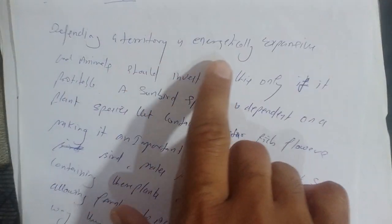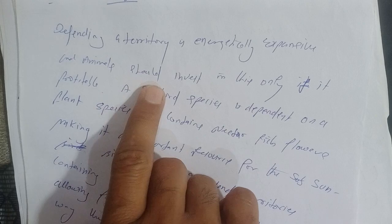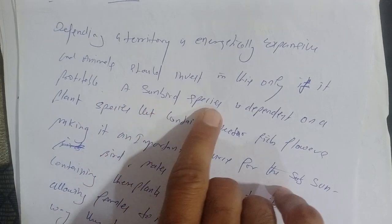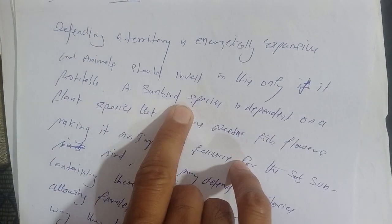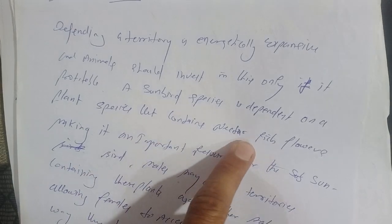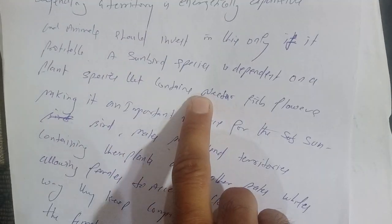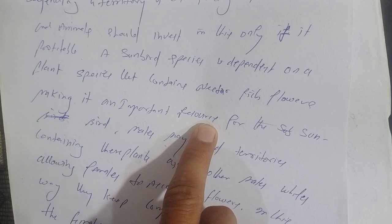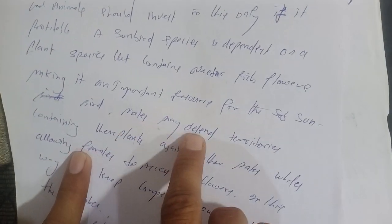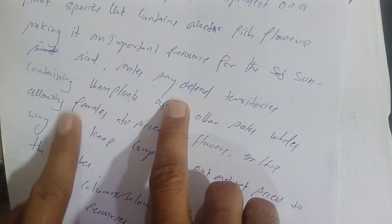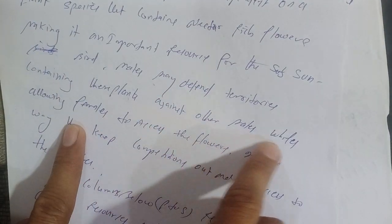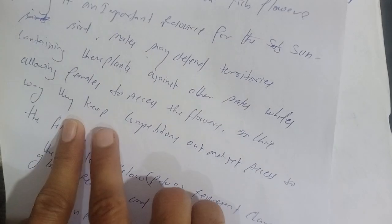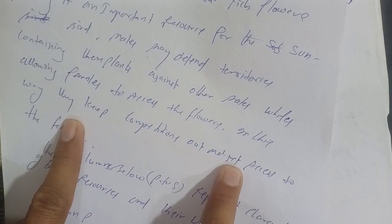The question is about defining the territory of the energetically expensive in an animal — should we invest in this only if it is profitable? It is about sunflower species that depend on plant species. These plants contain nectar-rich flowers. The nectar content around the flower makes it an important resource. Male animals depend on territory containing these plants against other males, allowing females to access the flowers.